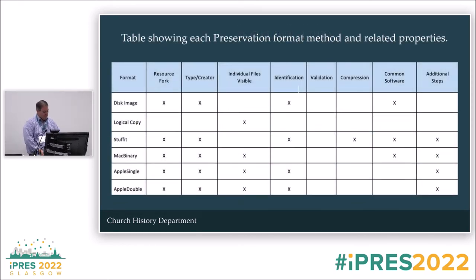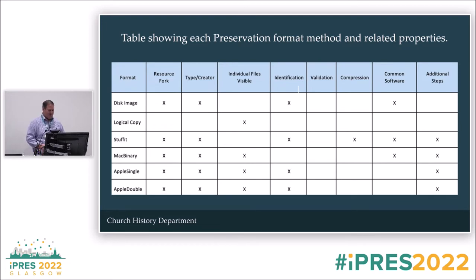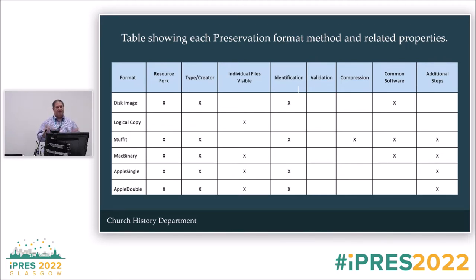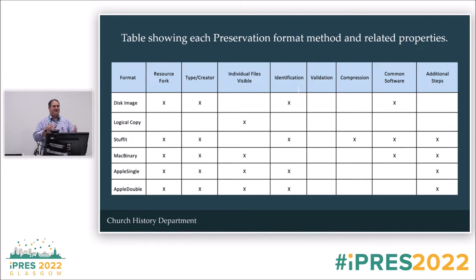So the results. We use Rosetta in our preservation system, so that was the main thing I had access to for testing. I was also able to use a sandbox of Archivematica, and David graciously ran it through Preservica for me to do a little test to see if there were any variables I didn't take into account. They all had pretty similar results with a couple of caveats.